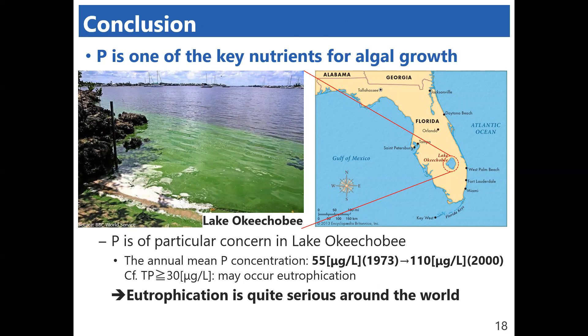phosphorus is one of particular concerns. The annual mean phosphorus concentrations have increased dramatically from 55 microgram per liter in 1973 to 110 microgram per liter in 2000. Hence, it is said that eutrophication is quite serious around the world.